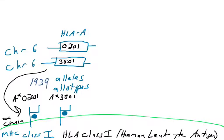We left off talking about the different versions of the HLA-A gene one could inherit — the different alleles — and there are many different versions. Those alleles make different allotypes, and those allotypes can present different peptides. The reason it's advantageous to present different peptides is that the more different peptides you can present, the higher the chance that you're going to have a T cell with a T cell receptor that will bind one of those peptides. So the more peptides we can present to the immune system, specifically to T cells, the better.